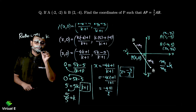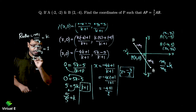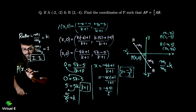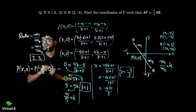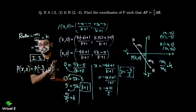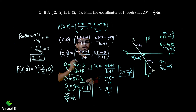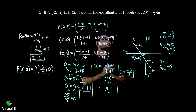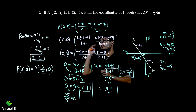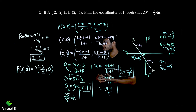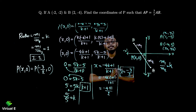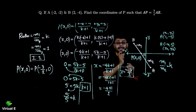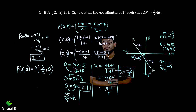So m1 by m2 equals k equals 1, meaning the ratio is 1 is to 1. And point P is minus 3 by 2 comma 0. This is how we solve problems where a line joining two points is divided by an axis and the ratio is also unknown.